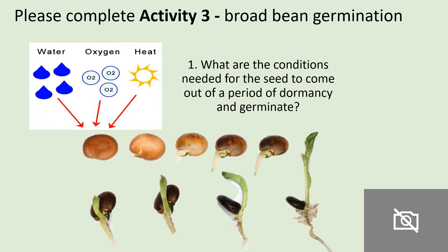What are the conditions needed for a seed to come out of a period of dormancy and to germinate? There are a few things required: the first is water, the second is oxygen, and the third is heat.